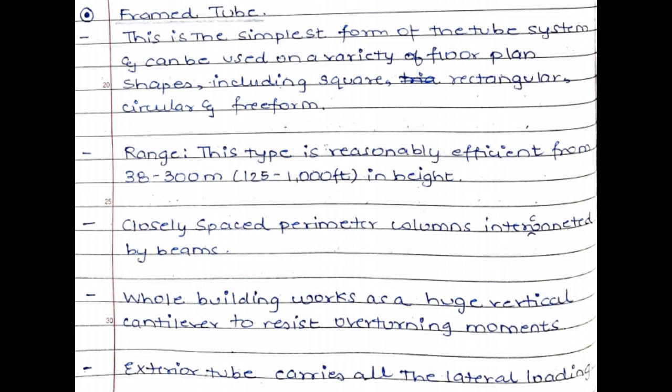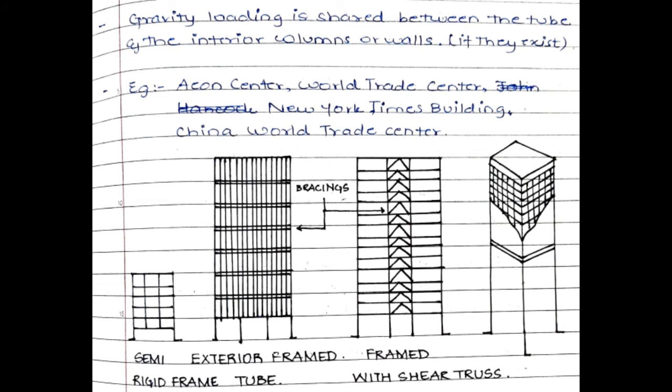First, the framed tube — this is the simplest form of the tube system. Various shapes can be used: square, rectangle, circular, free form, any shape. The range of the framed tube system is generally from 30 meters to 300 meters in height. The closely spaced perimeter columns are interconnected by beams, and the entire building works as a huge vertical cantilever to resist the overturning moment. Gravity loading is shared between the tube and the interior columns or walls if they exist. Examples include the Aon Center, World Trade Center, New York Times Building, and China World Trade Center.